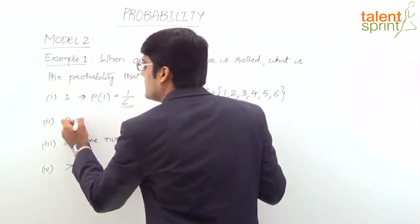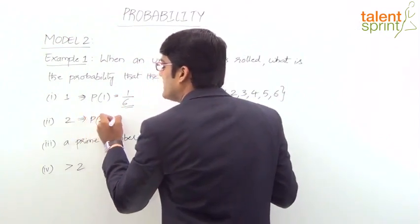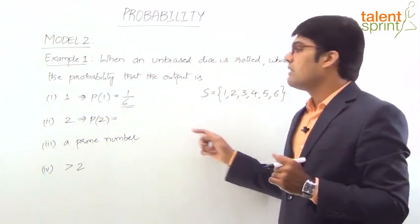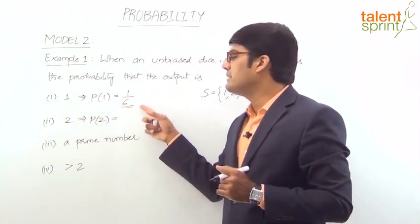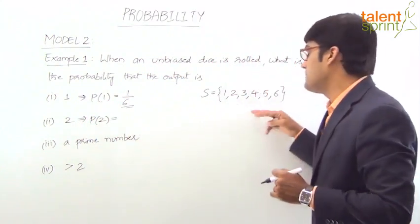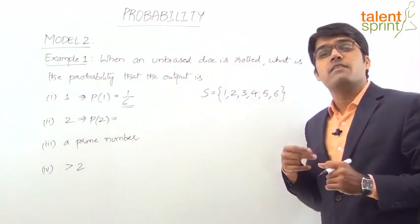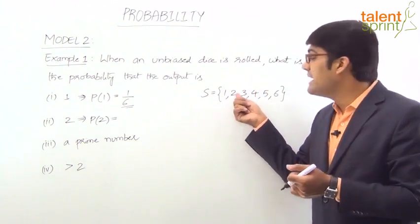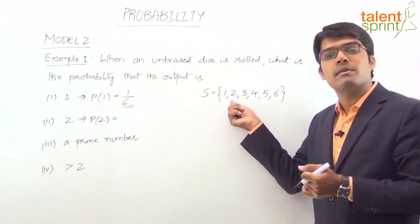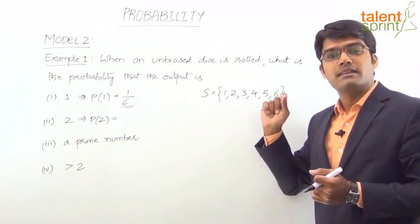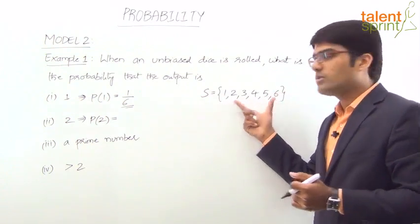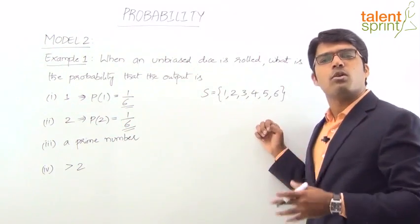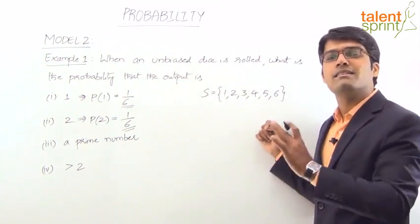Similarly, what is the probability that the output is 2? Looking at the sample space, how many favorable cases give output 2? It is one case — one outcome favors this event — divided by total 6 outcomes. So the answer is 1/6. In fact, for any single output — 1, 2, 3, 4, 5, or 6 — the answer is always 1/6.